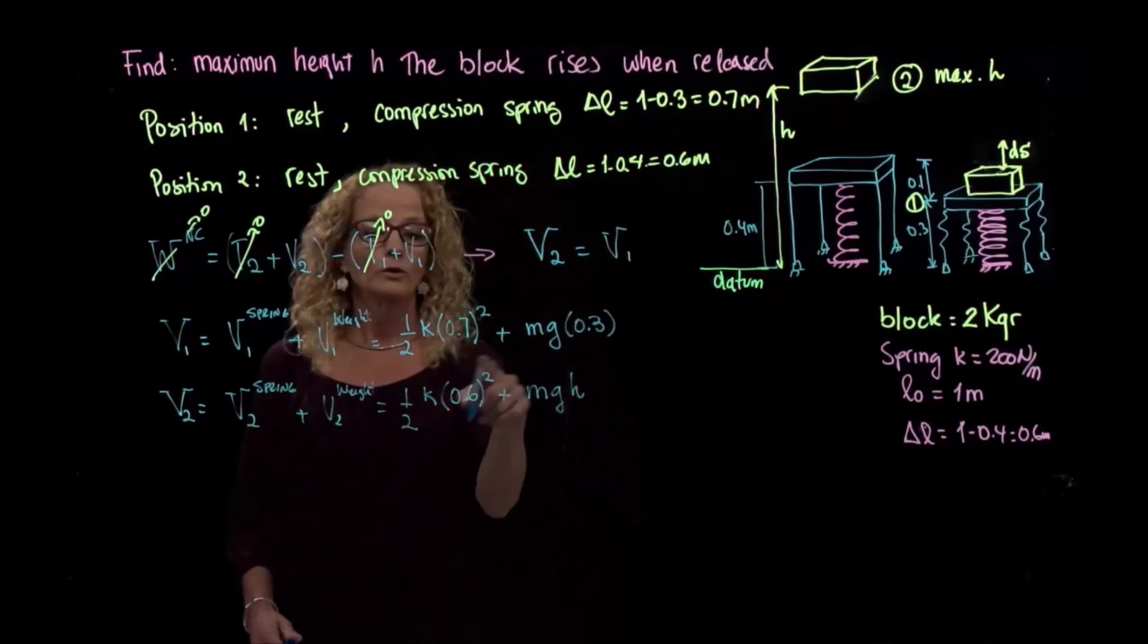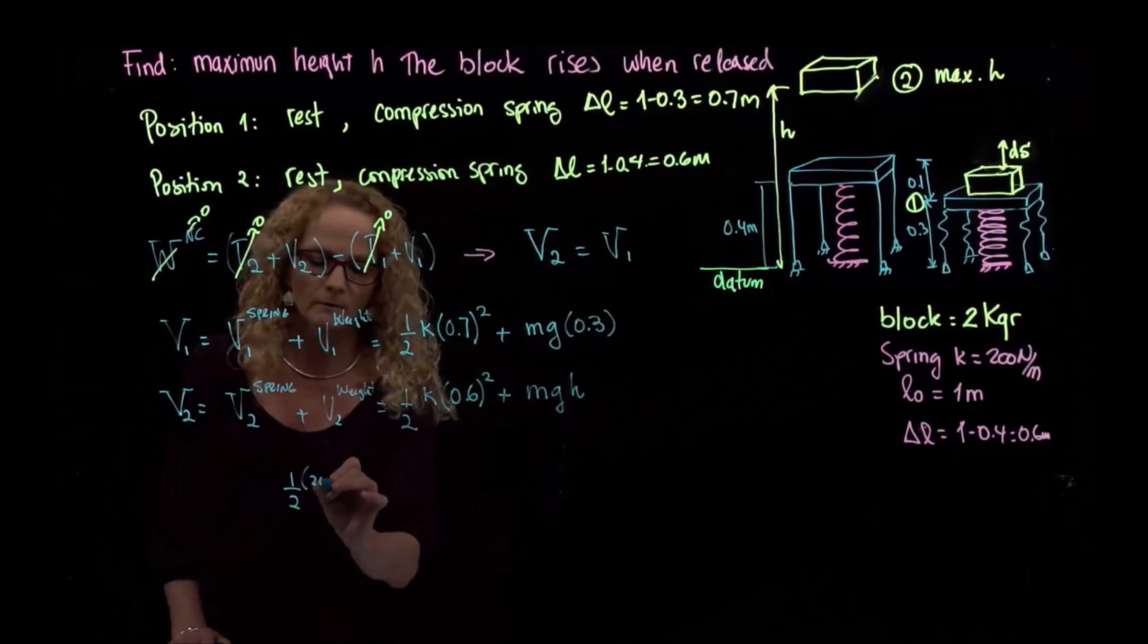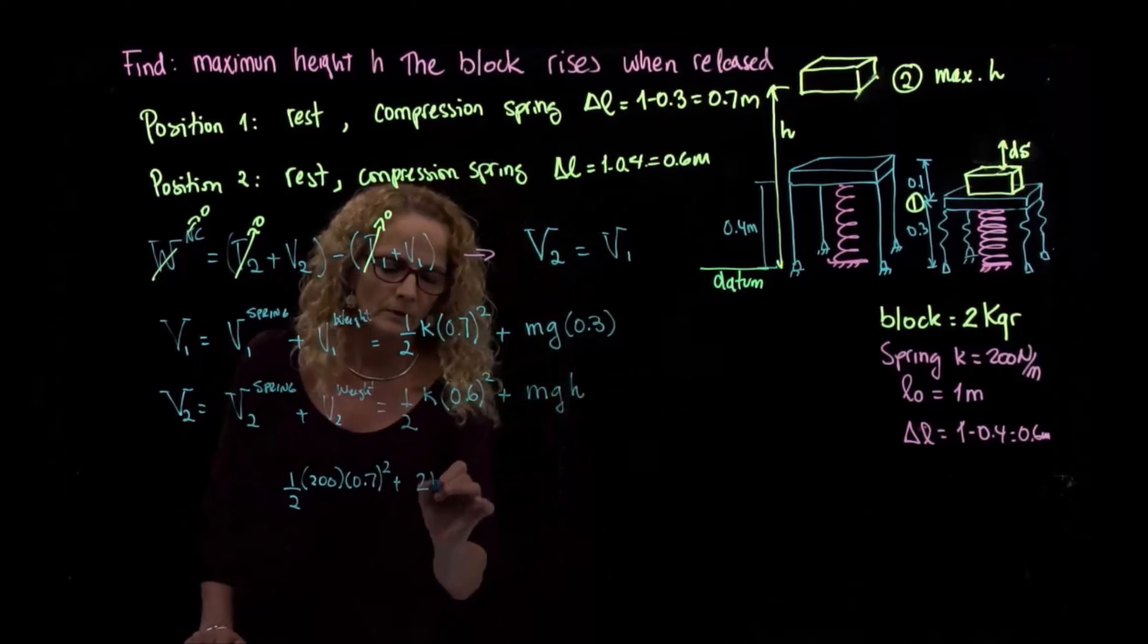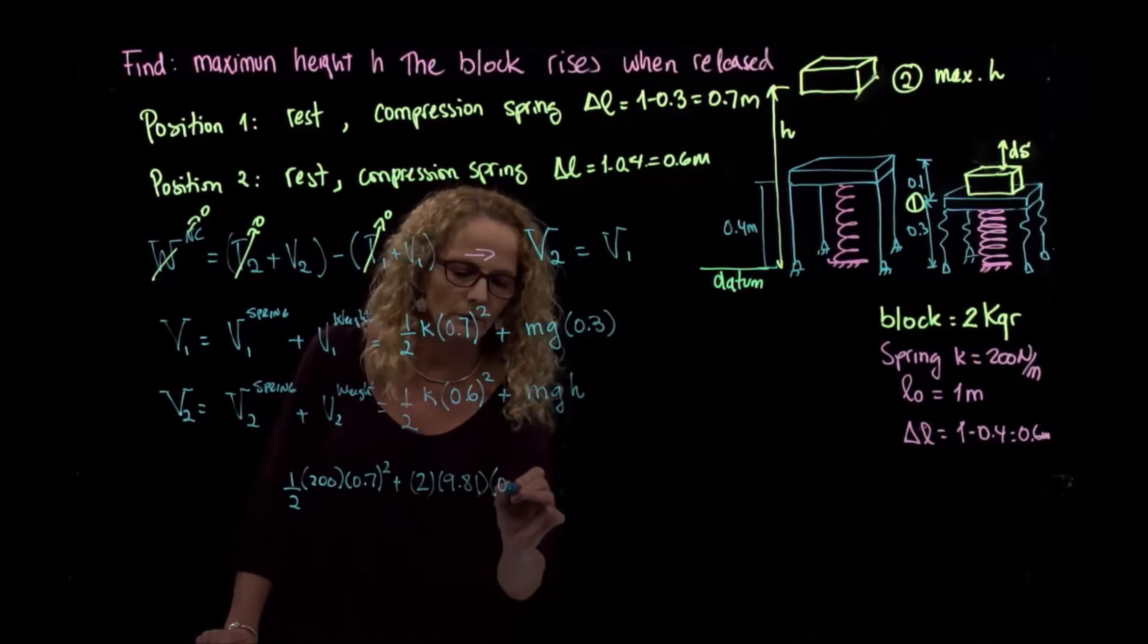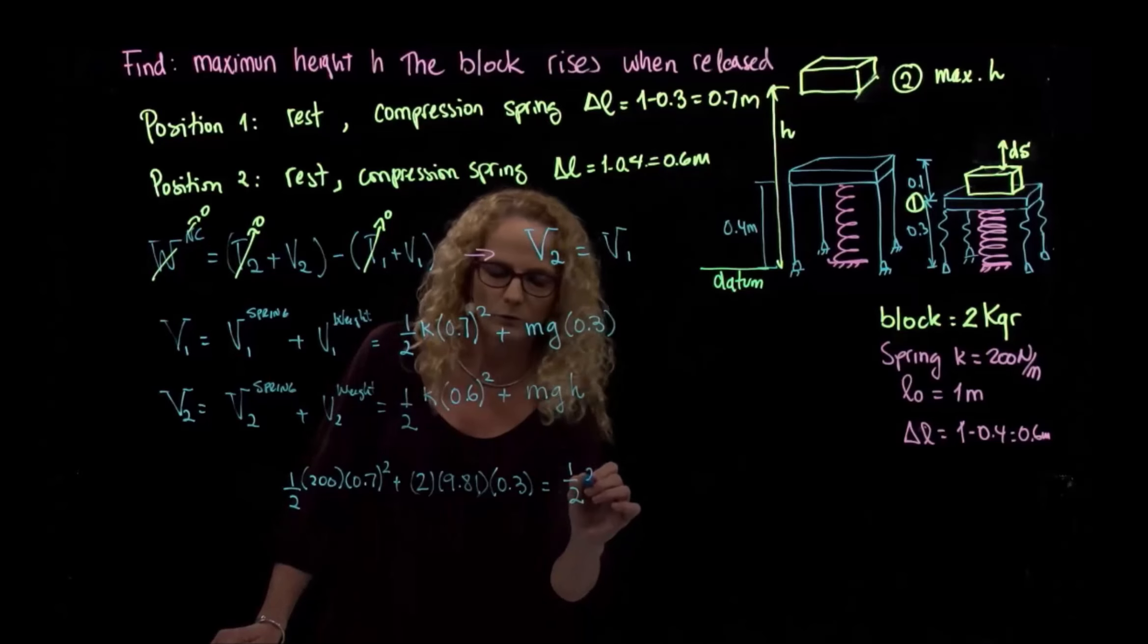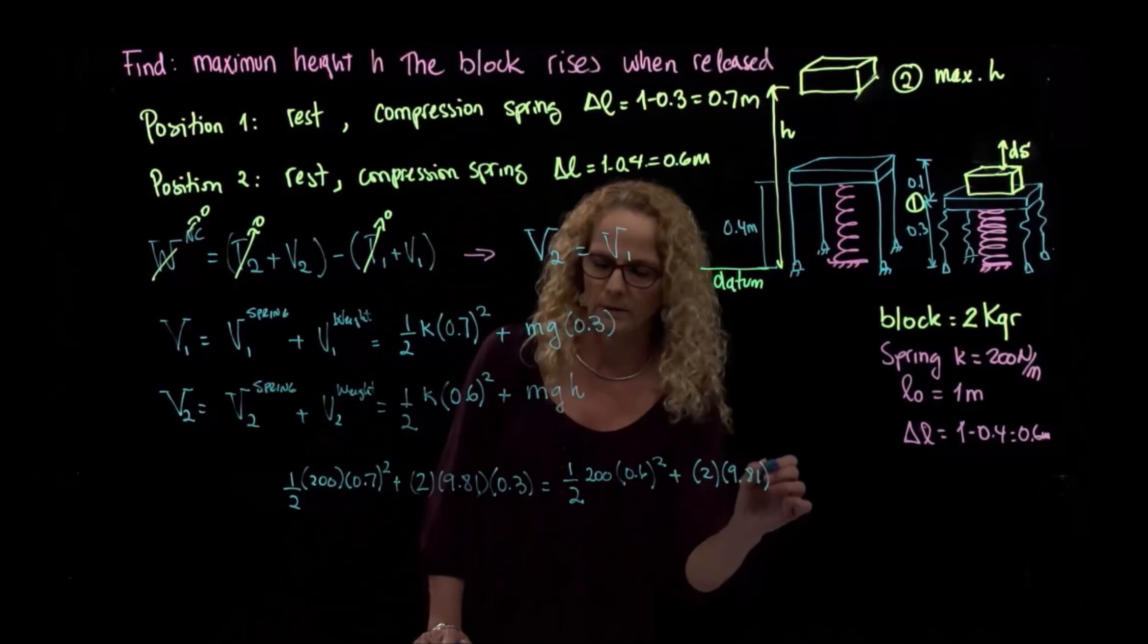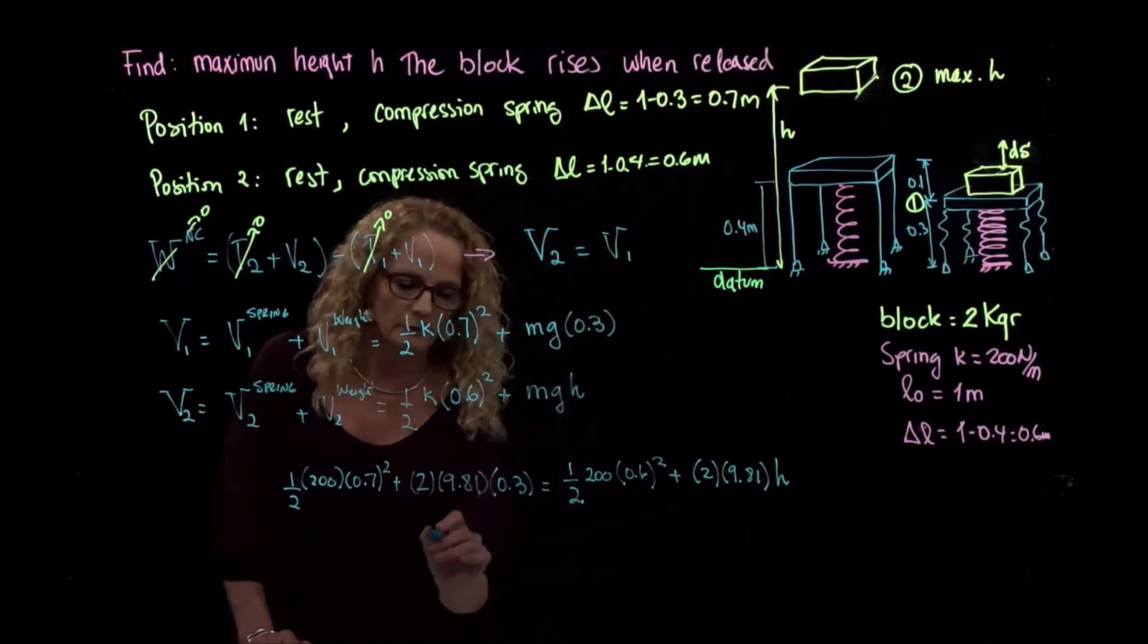So we make those two equal, and then we will have one-half k equals 200, 0.7 squared plus the mass is 2, the gravity is 9.81, times 0.3 will equal one-half 200, 0.6 squared plus 2 times 9.81 h. And then we just have to solve for h. And solving for h.